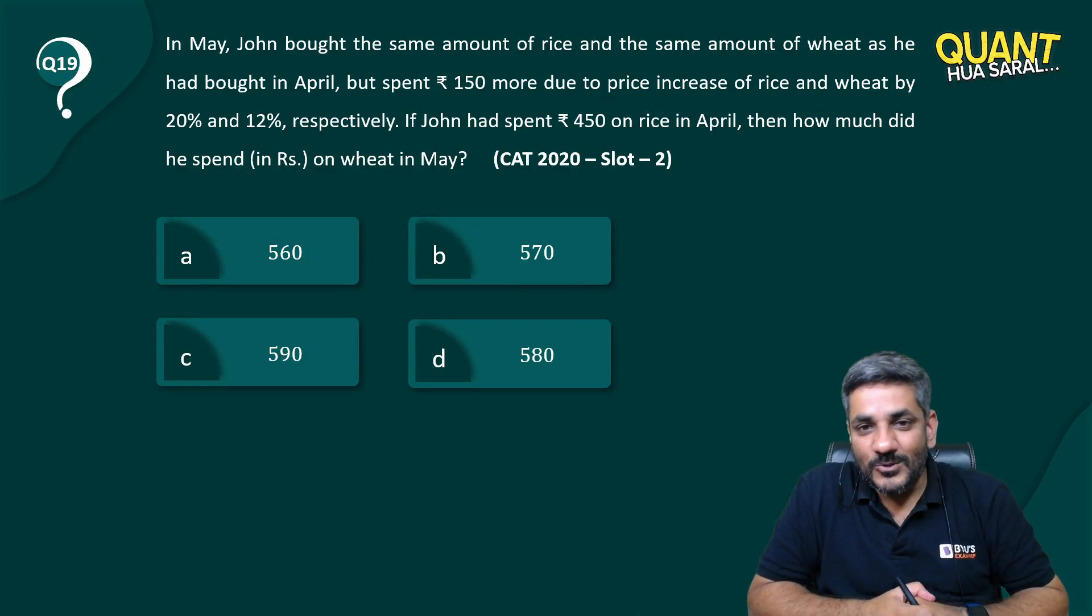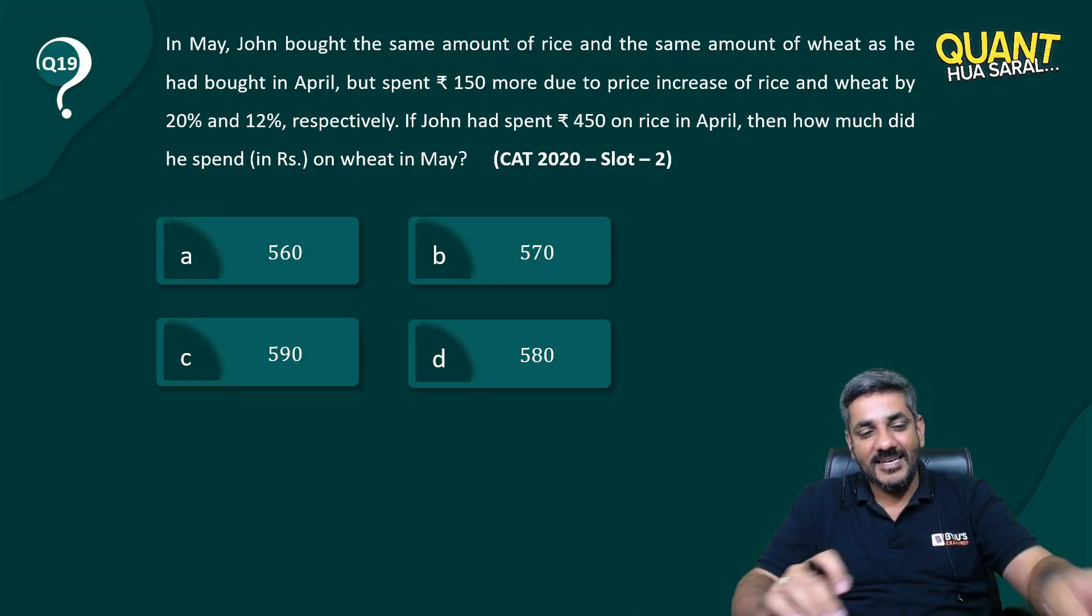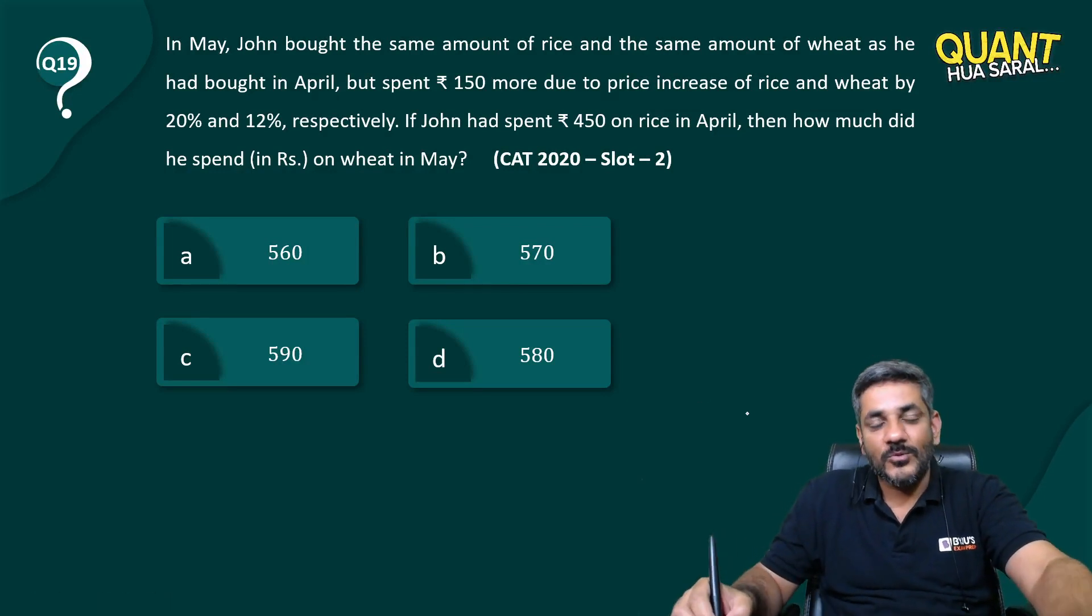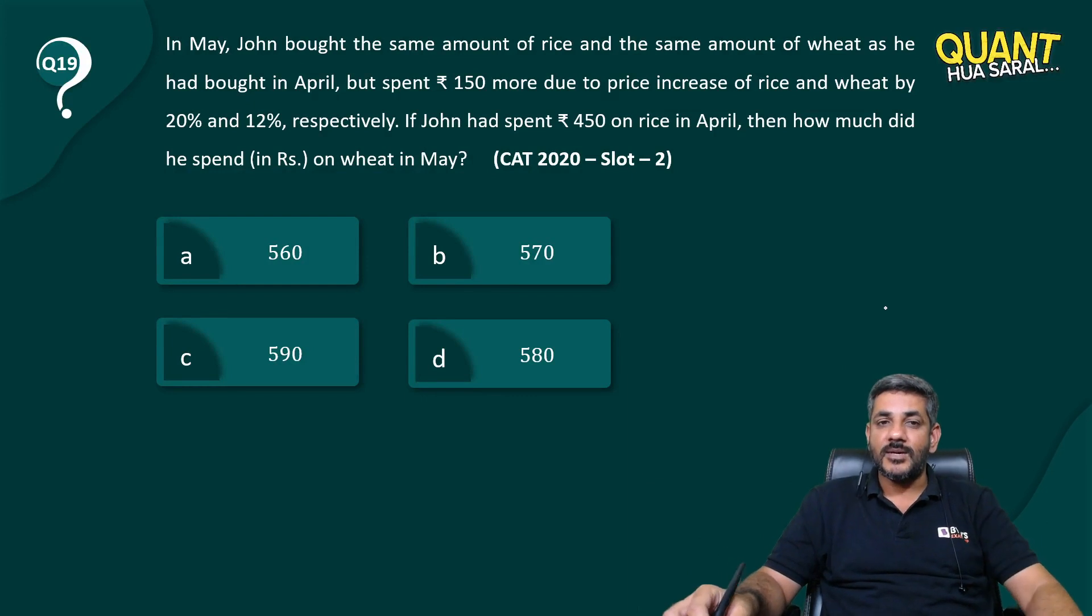Hello students, welcome back to Quant with Saral. Question number 19 for today, let's have a look once again, a question from CAT 2020 Slot 2. In May, John bought the same amount of rice and same amount of wheat as he bought in April,